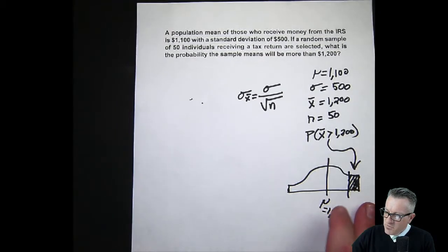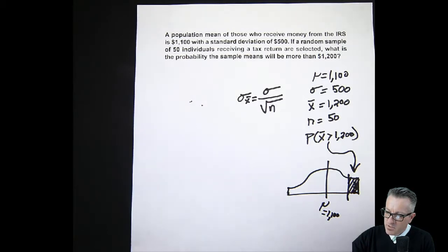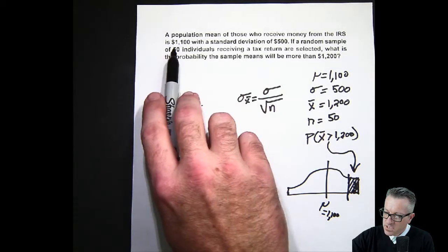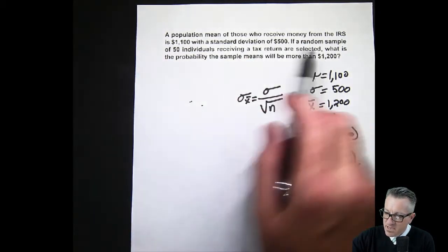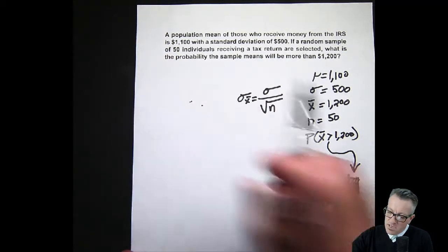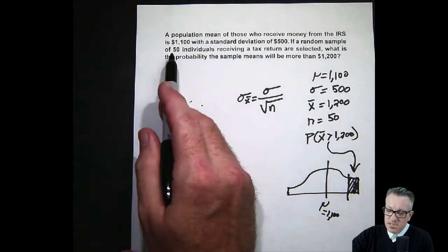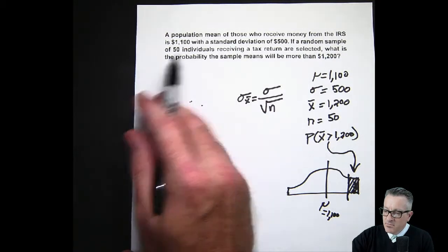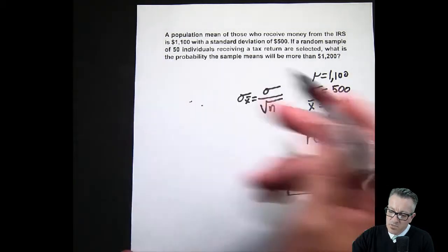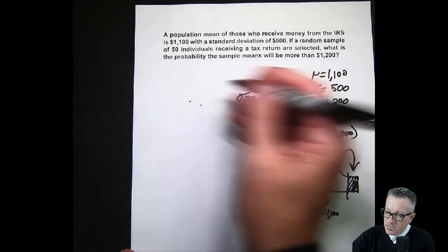Let's solve this. Right off the bat, we have a population standard deviation and mean, and we have a sample that's greater than 30. The normal thing I would do here is ask: are we going to use the t-distribution or the z-distribution? But we have a decent sized sample and we have a population standard deviation and mean, so we can just use the z-distribution.